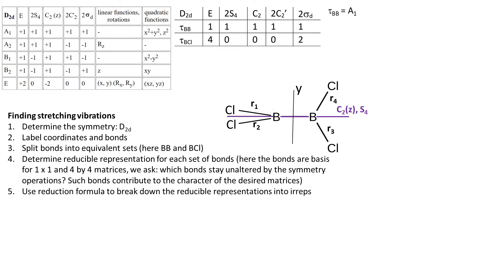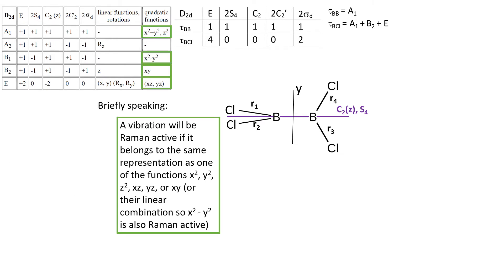Now let's break down the representation for the 4 BCl bonds. I have already showed you how to do that in one of my previous videos. So anyhow, we get these irreps.